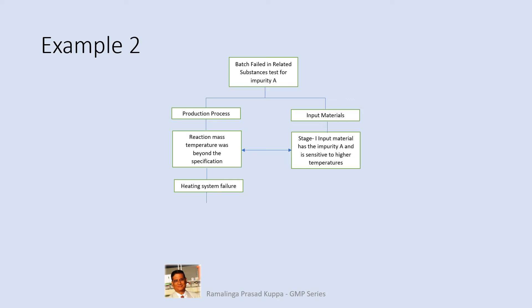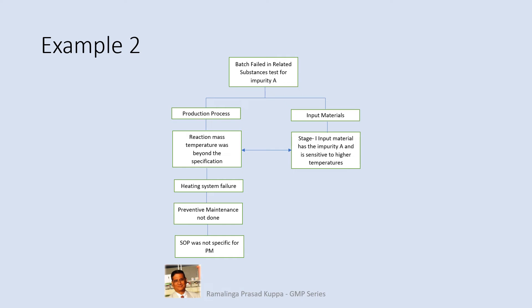Further evaluation reveals that there was a failure of the heating system — the input steam could not be controlled, leading to a significant rise in temperature and causing the product to fail in impurity A. At the next level, it was found that preventive maintenance of the boiler was not carried out. Evaluating why it was not done, there was no specific requirement in the SOP to carry out preventive maintenance for the heat generation system — the boiler. So FTA identifies two major failure causes: the temperature-sensitive input material in stage 1 and the poorly maintained heating system.